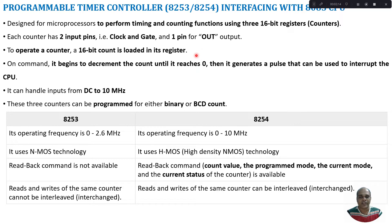Then we can perform certain actions. For example, take an LED — I want to switch it on and off after every one second. First I can switch on the LED, then initiate a timer with a value such that when the count reaches 0, we have a one-second delay. Once the counter starts, it keeps decrementing. When the count reaches 0, a trigger signal is sent to the CPU, which can then toggle the LED logic.